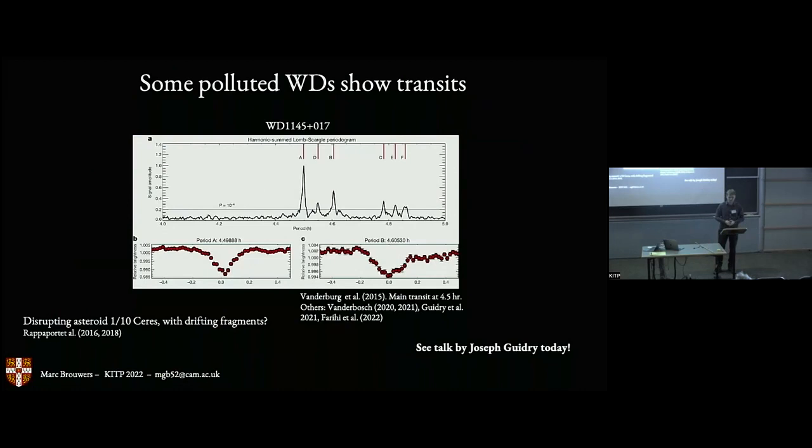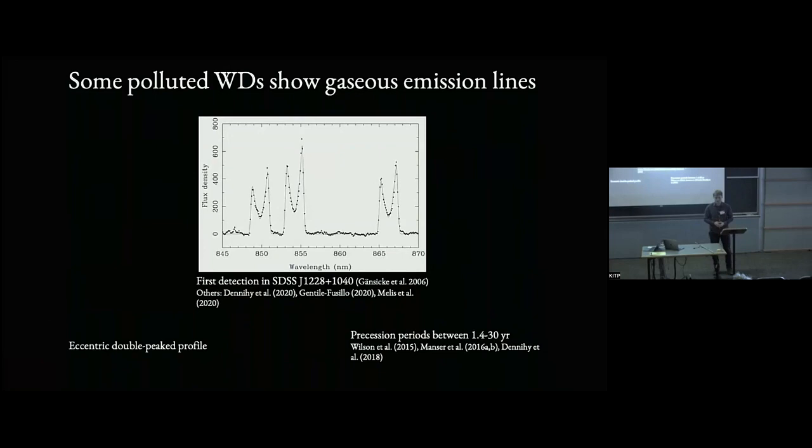We also know that some white dwarfs show transits. This is a nominal example of WD 1145, which has transits with a period of about 4.5 hours. Other systems are also known that have transits, but they don't typically have the same periodicity. We know that some white dwarfs show gaseous emission lines, these double peak profiles that are not exactly symmetric, showing there's some eccentricity in the system. These two peaks oscillate, again showing that there's eccentricity, that they're precessing.